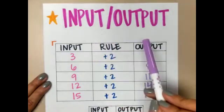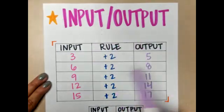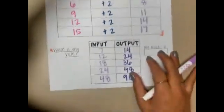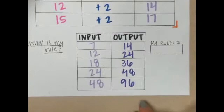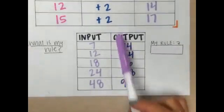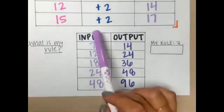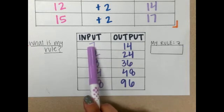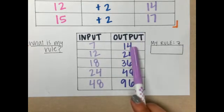Now, not all input-output tables have a rule. Some of them look like this. Notice, I do not have a rule here. I just have an input and an output. My question is, what is my rule? I have to figure out what my rule is based on the input of the number and the output.